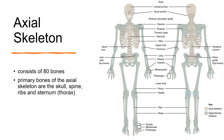The axial skeleton consists of 80 bones. Examples are the skull, spine, ribs, and sternum, which is the bone that lies in the anterior midline of our thorax.